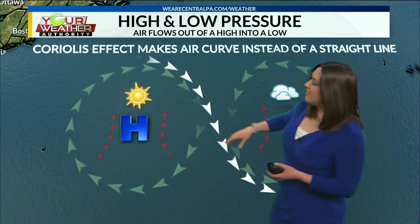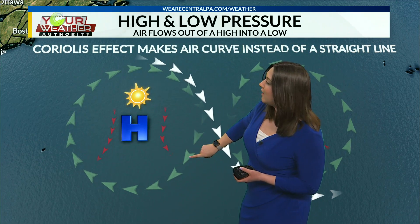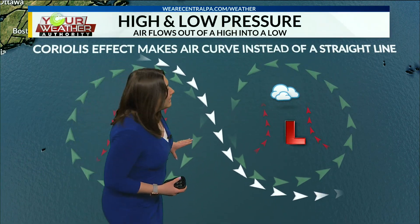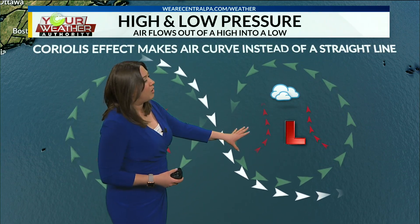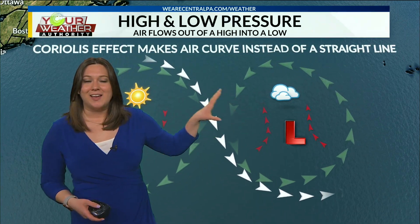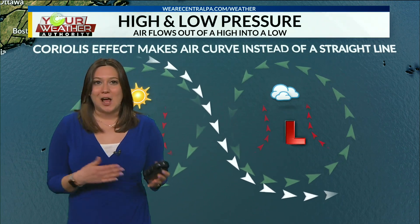Here's a visual explainer. With high pressure, we've got that clockwise and outward diverging motion, allowing for clearer conditions. Looking at the low, those winds are spinning counterclockwise. We've got air moving up into the sky, showing our high and low systems. With that upward movement, the air condenses, creating clouds and not-so-great weather. That's how high pressure and low pressure impact us on a daily basis and help create our weather.